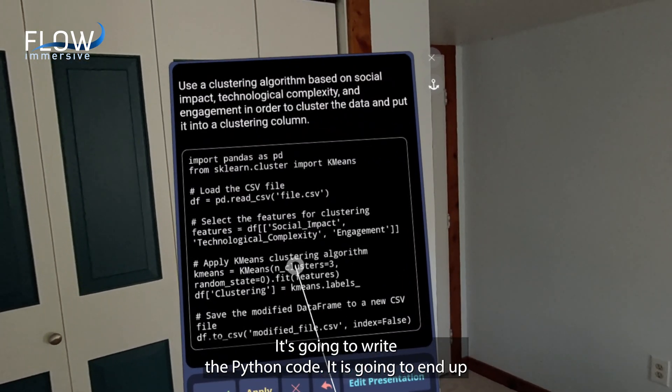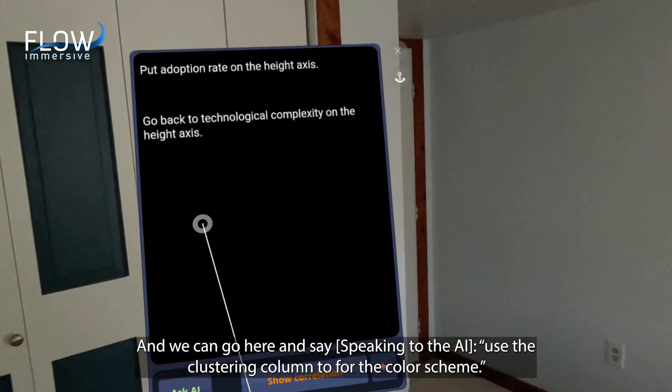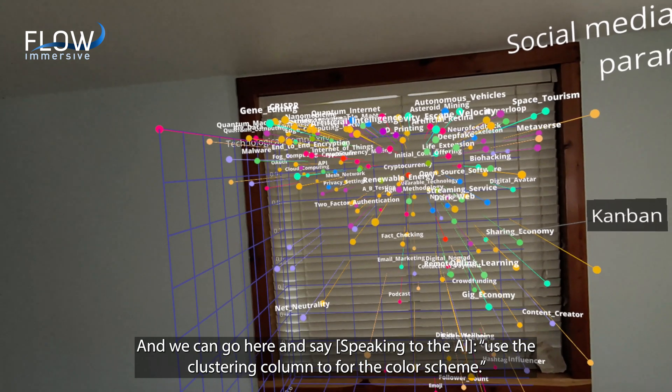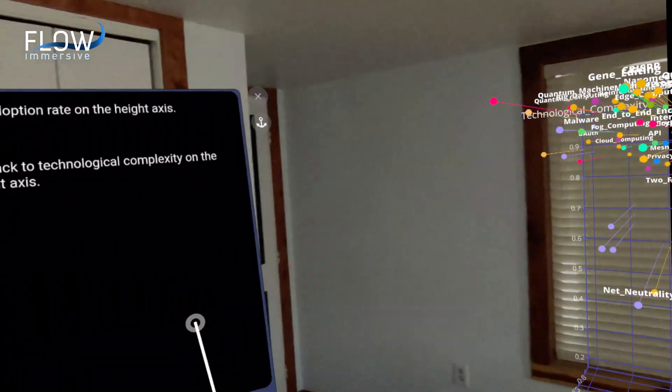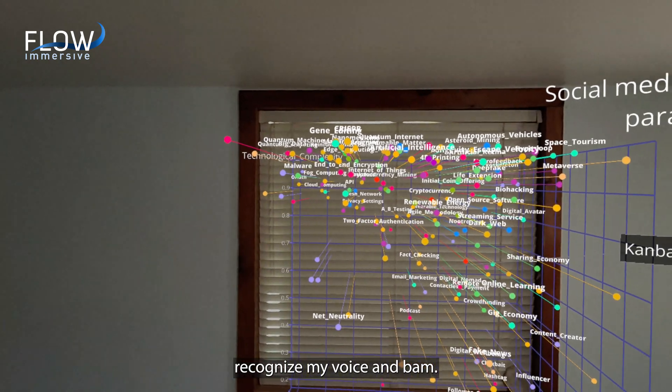It's going to write the python code. It's going to end up using something called a k-means clustering and apply that and we can go here and say use the clustering column for the color scheme. Recognize my voice. And bam.